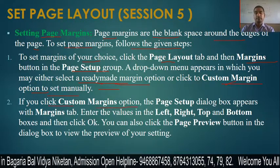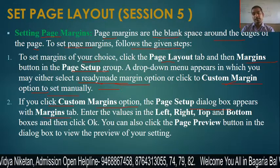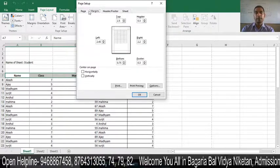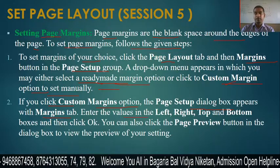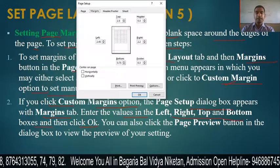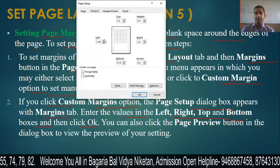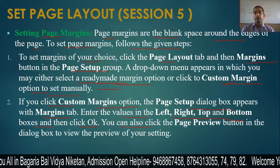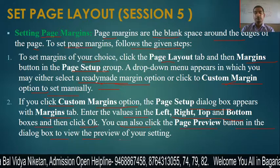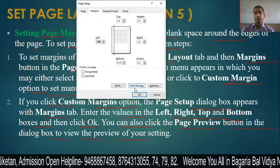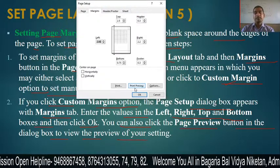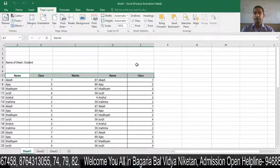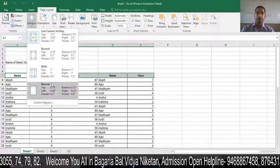If you click Custom Margins, the Page Setup dialog box appears. In this dialog box you can enter values for Left, Right, Top, and Bottom margins and click OK. You can also click the Print Preview button in the dialog box to see how the page will actually print. This is how you set the margin manually, and you can also use the ready-made margin options.